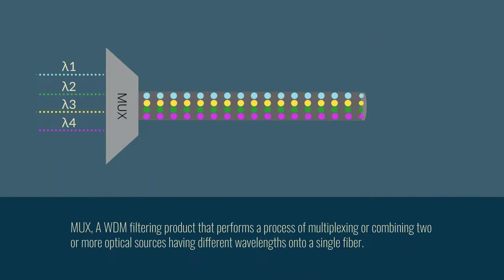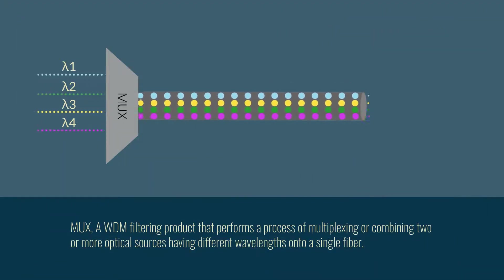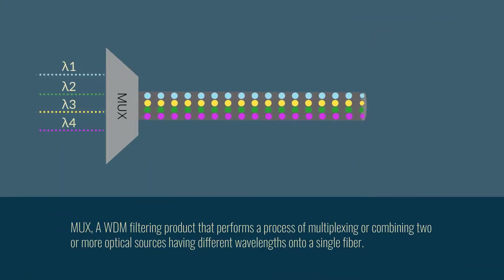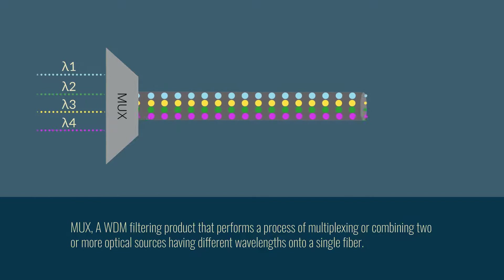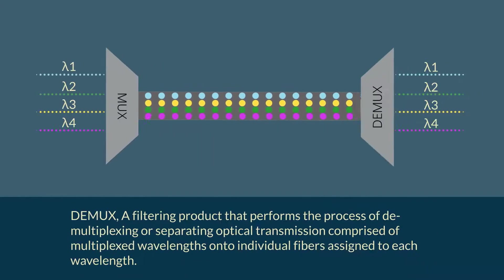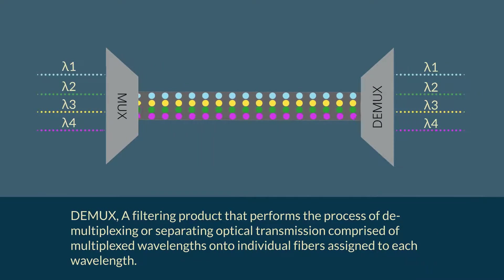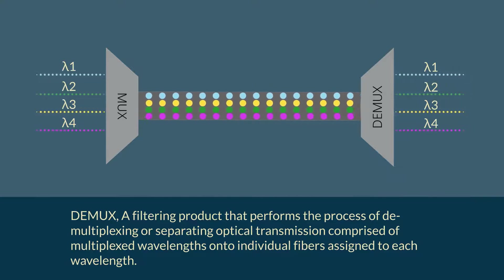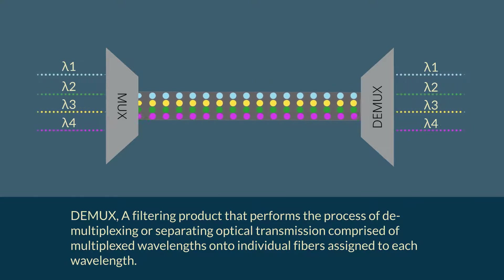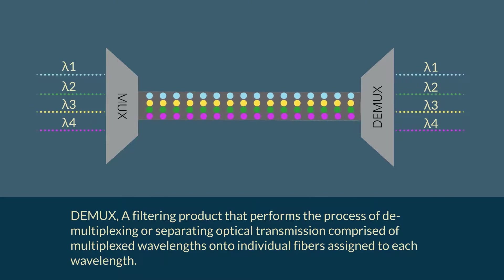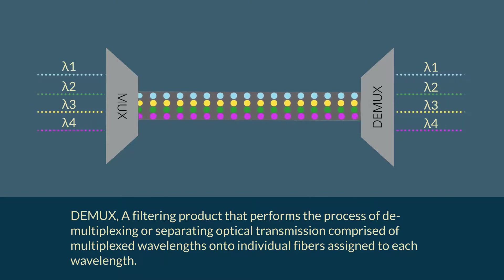MUX performs a process of multiplexing, or combining two or more optical sources having different wavelengths onto a single fiber. D-MUX performs a process of demultiplexing, or separating optical transmission comprised of multiplexed wavelengths onto individual fibers assigned to each wavelength.